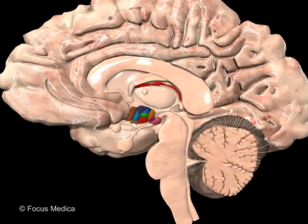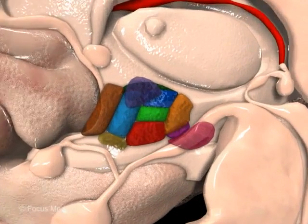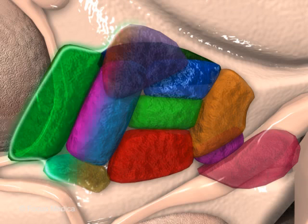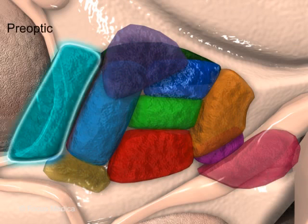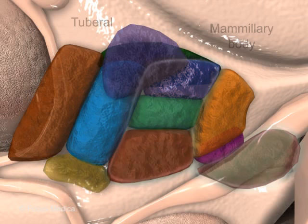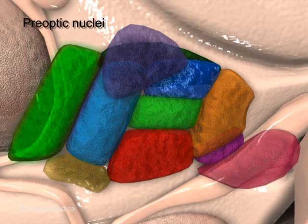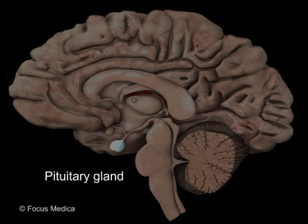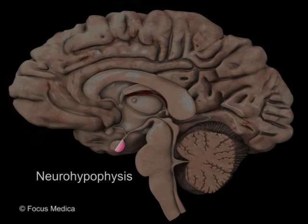The hypothalamic nuclei are classified based on the region they occupy. There are four regions from anterior to posterior: preoptic, supraoptic, tuberal, and mammillary. The preoptic nuclei are located in the preoptic area, immediately below the lamina terminalis. The pituitary gland can be considered an extension of the hypothalamus, particularly the neurohypophysis.